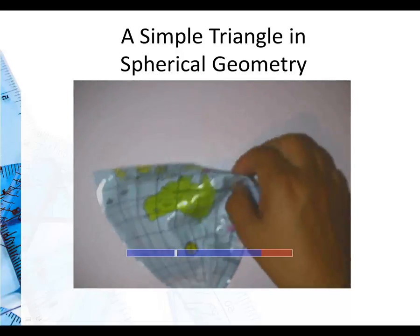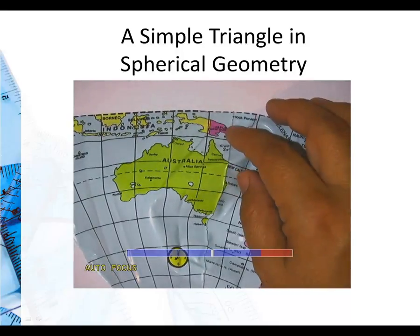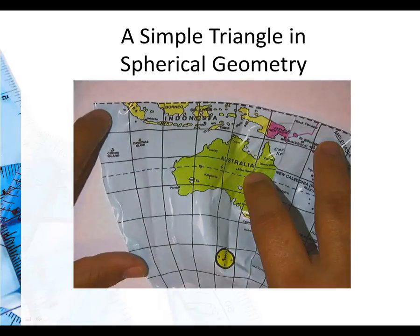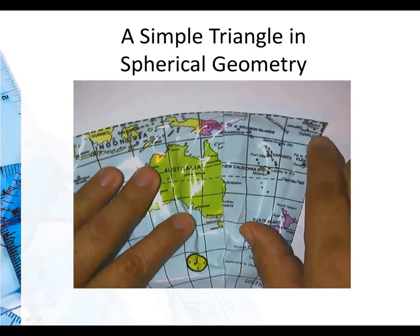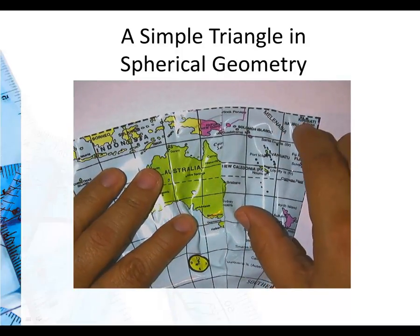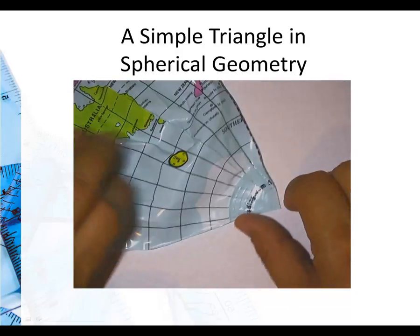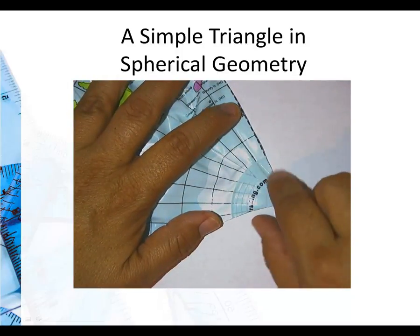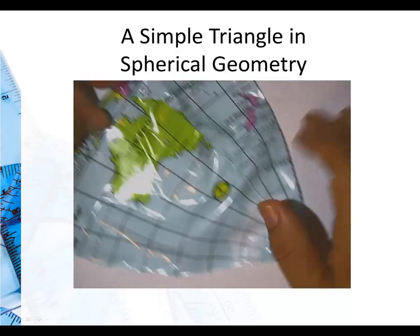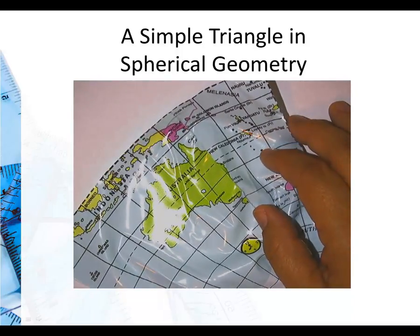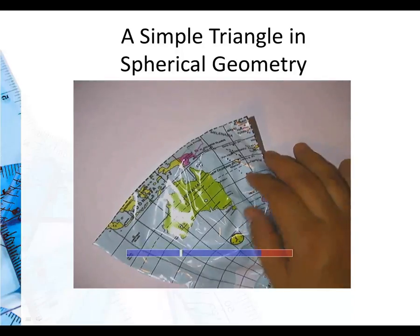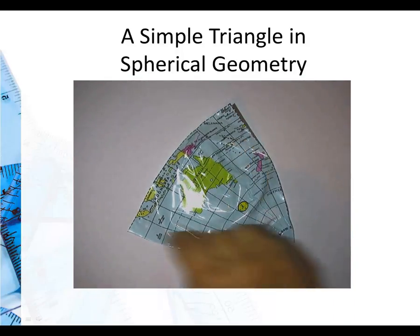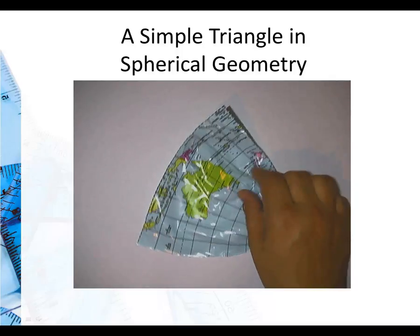So here's a triangle. I'll zoom in just a touch. And I went ahead and looked at the southern hemisphere. And you can see there's 90 degrees there. There's 90 degrees there. You can tell because it's a square. And I also have, as poorly cut out as it is, a 90 degree angle here. So what are the total number of degrees in this triangle? Well, you could argue that the total number of degrees is 90 plus 90 plus 90, which is 270.